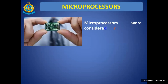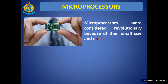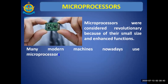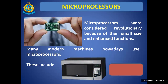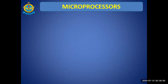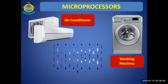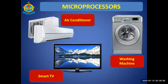Microprocessors were considered revolutionary because of their small size as well as enhanced functions and features. Many modern machines also use microprocessors today — including microwave ovens, air conditioners, washing machines, smart TVs, and LEDs or LCDs. The use of microprocessors has not only reduced the cost of these devices but also their size and weight, making them lighter and more reliable compared to previous devices.